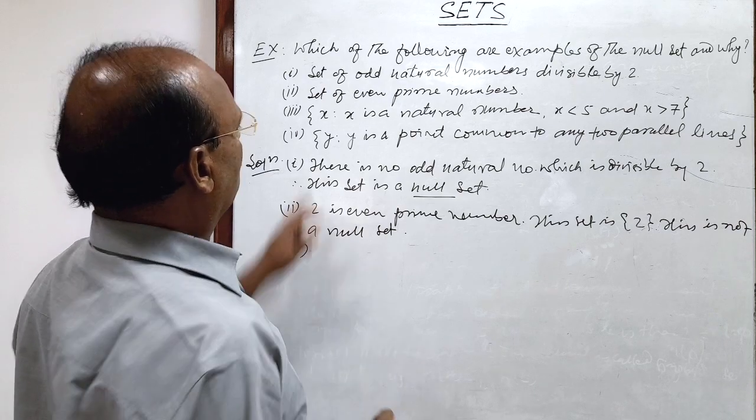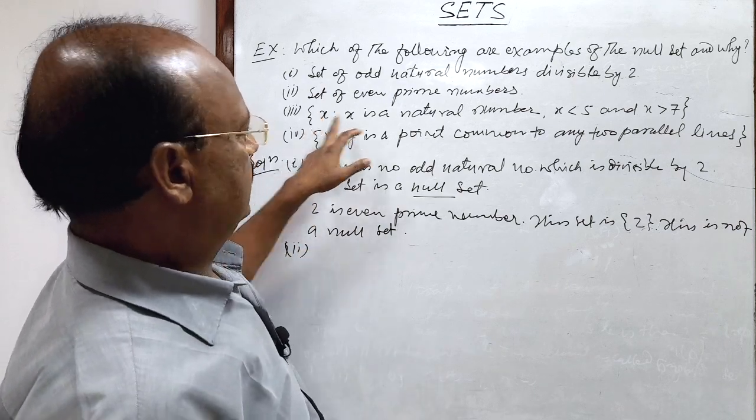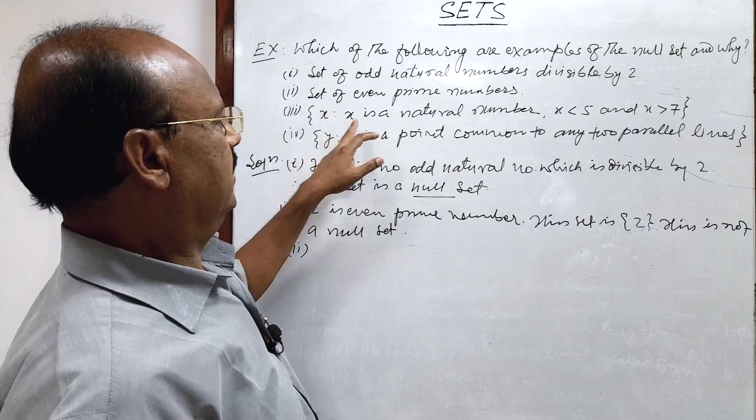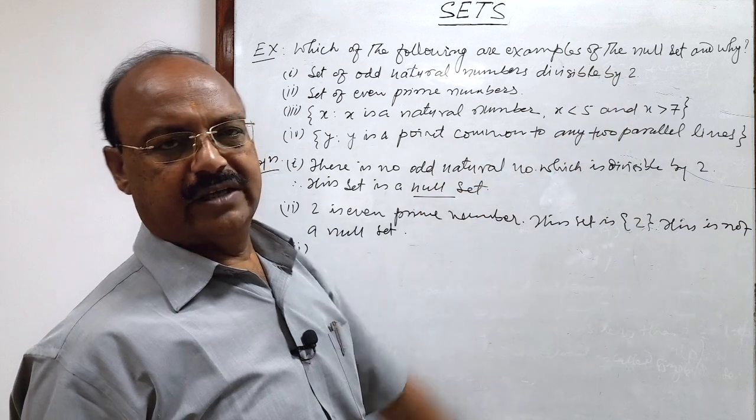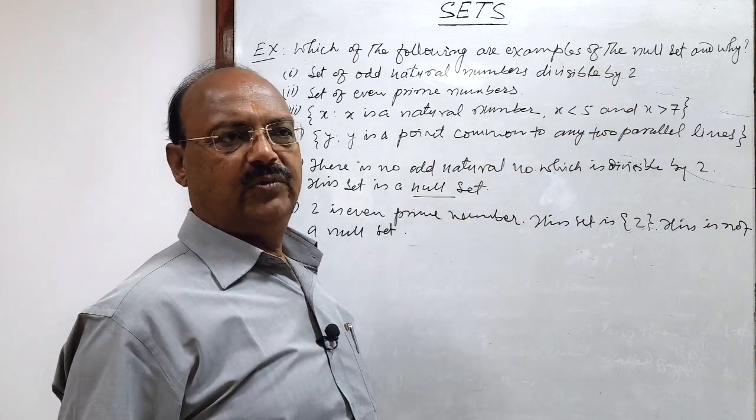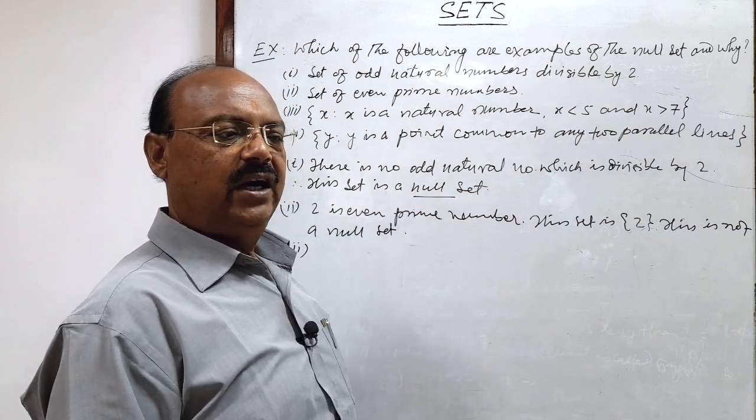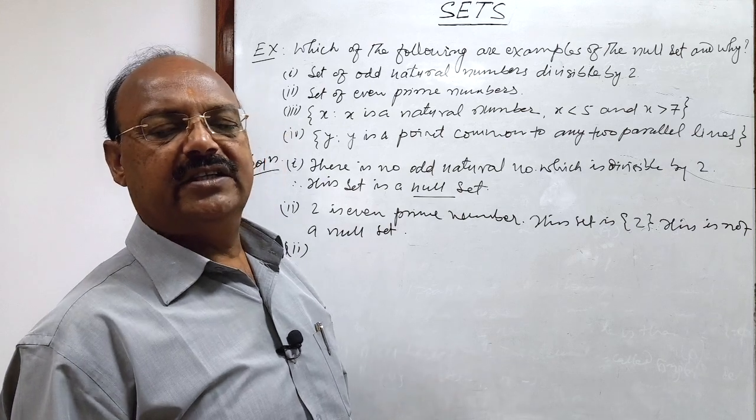Now third, set consisting of elements x, such that x is a natural number which is less than 5 and greater than 7. There is no natural number which is less than 5 and at the same time it is greater than 7.